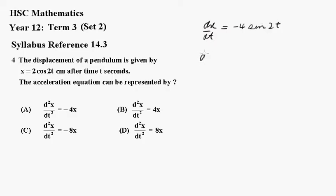Now doing it again, we're going to get 2 comes down the front, minus 8 cos 2t.